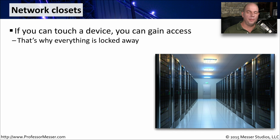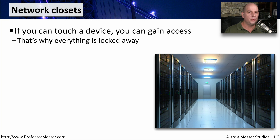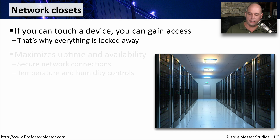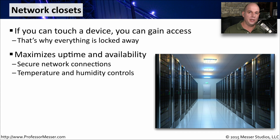If you work in an office, you've probably noticed that the network equipment and the file servers are not out in the open. They're not sitting on someone's desk and they're not accessible by anybody — they're usually locked up in a network closet. That's because if you can gain physical access to a particular device, you can then gain access to the workings of that device, including the operating system, or log into the router, switch, or firewall. That's why we lock everything away for security. A network closet also maximizes the uptime of these devices because you can have complete control over the power, the environmental controls, and everything associated with the surrounding environment that keeps those devices running.